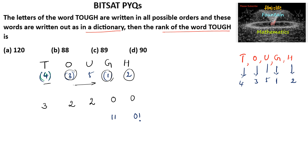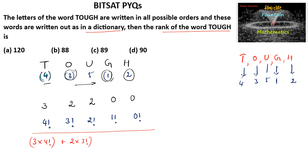Then we write 0!, 1!, 2!, 3!, and 4! and multiply correspondingly: 3 × 4! + 2 × 3! + 2 × 2! + 0 × 1! + 0 × 0!.